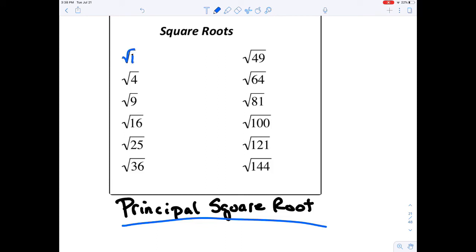For example, the square root of 1, like I have here. All I want is the principal square root, which is the positive version. So what number times itself equals 1?